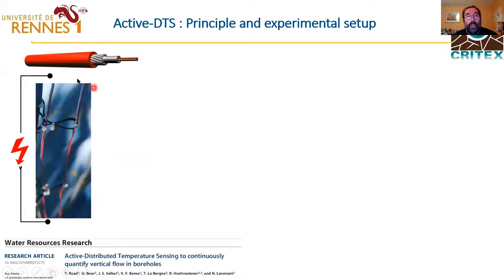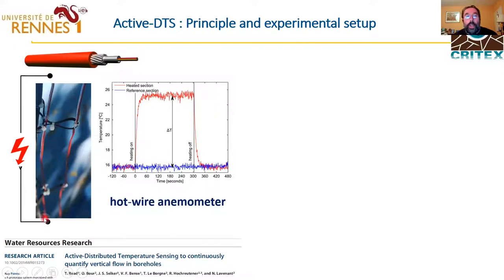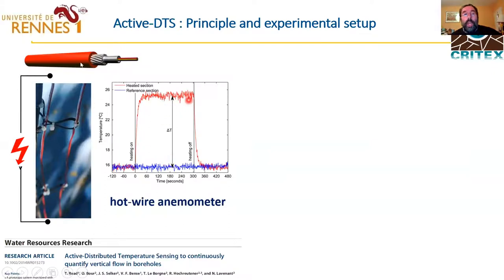The idea of active DTS is to use a heat source. Typically what you can use is a heating cable, and then you can record temperature with fiber optics. But you can also use the fiber optic cable itself. If you use the armoring of the cable, you can inject electrical current along the fiber optic cable and do a heating. Depending on the properties of the electrical current, you will have an increase of temperature that depends on the heat source but also on the flow around. It has been used more or less as a hot wire anemometer in different conditions.